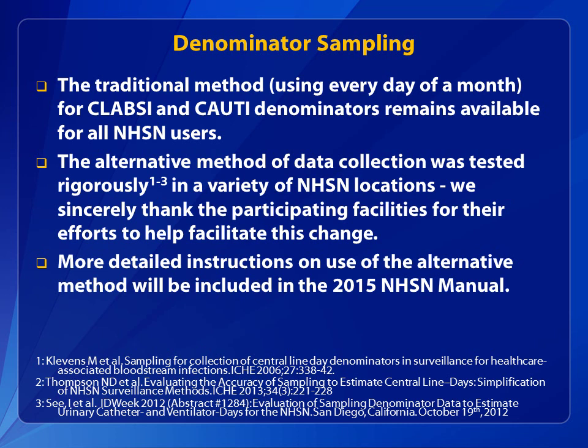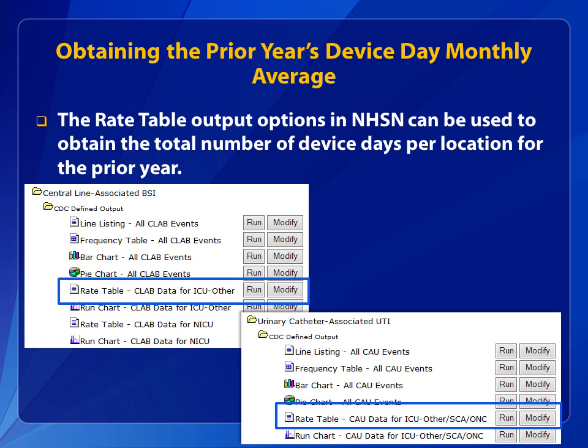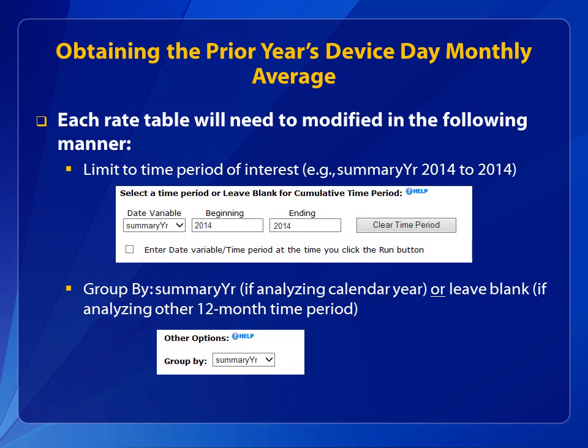More detailed instructions on using the alternative method are included in the 2015 NHSN manual. The rate table output options in NHSN can be used to obtain the total number of device days per location for the prior year. Specifically, you will want to modify the rate tables for CLABSI and CAUTI data. Each rate table should be modified so that the results include one rate per location per year. For example, if you wish to assess the average monthly device day count for calendar year 2014, you would need to modify the rate tables to include only 2014 data and group by summary year.